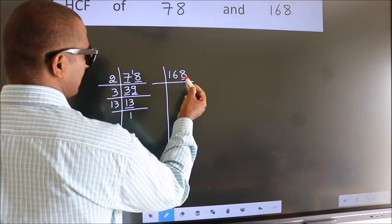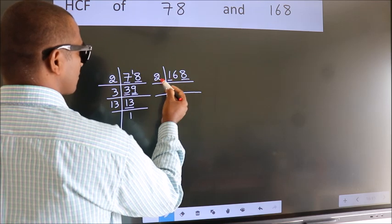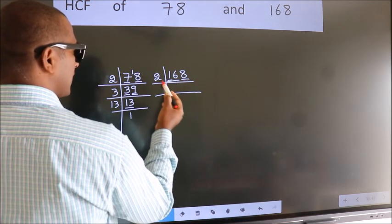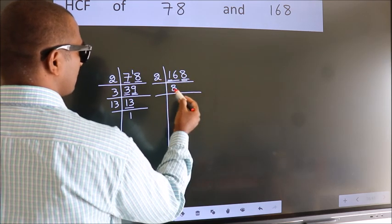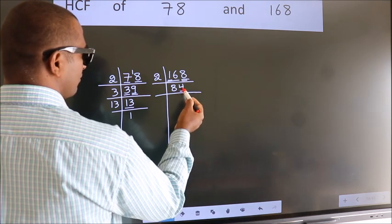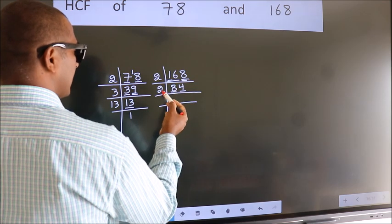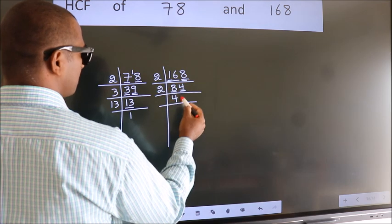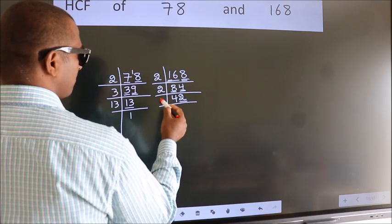Last digit 8, even number, so take 2. First number 1, smaller than 2. So 2 into 16. When do we get 16 in 2 table? 2 eights 16. The other number 8. When do we get 8 in 2 table? 2 fours 8. The other number 4. When do we get 4 in 2 table? 2 twos 4. Last digit 2, even number, so take 2.